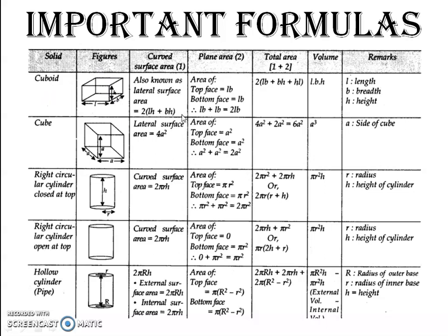Now, cuboid. The lateral surface area is 2 into (LH + BH). You can see this is L, this is B and this is H. The total surface area is 2 into (LB + BH + LH). Volume is length into breadth into height.